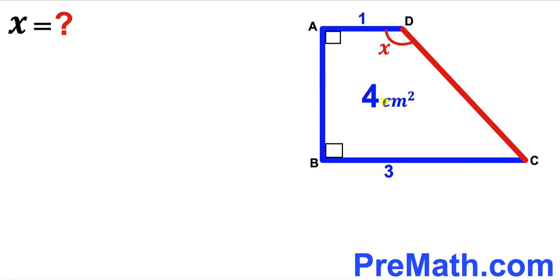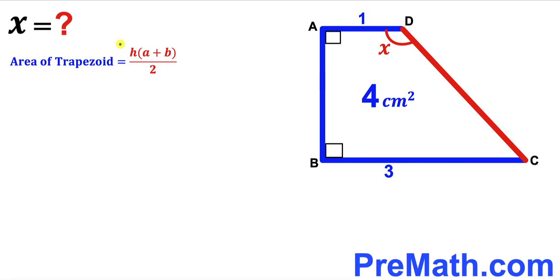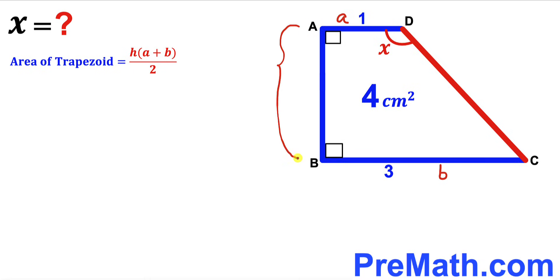Here's our first step. Let's focus on trapezoid ABCD. Since the area has been given as four centimeters square, let's recall the trapezoid area formula: area equals height h times the sum of the two bases a and b, all over two. Our lowercase a value is one and lowercase b value is three.